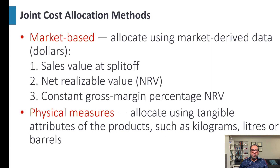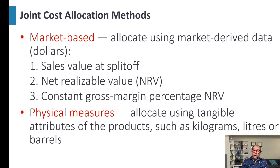To allocate the joint cost to specific products, there are different methods. Under the market-based approach there are three methods: sales value at split-off, net realizable value (NRV), and constant gross margin percentage NRV. The fourth method is the physical measure method, which allocates cost based on tangible attributes of the product such as kilograms, liters, or barrels.